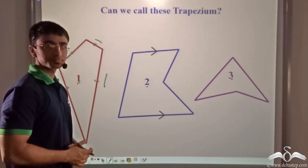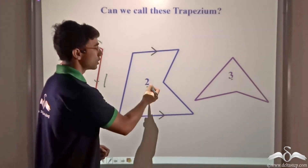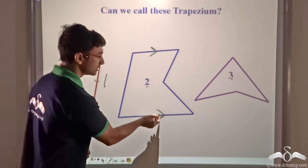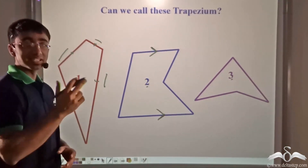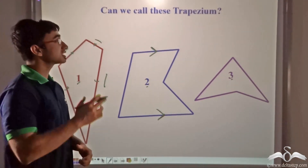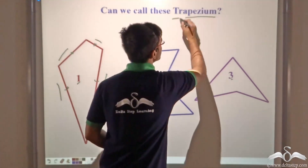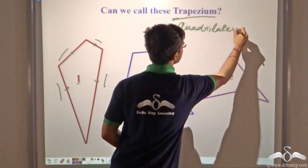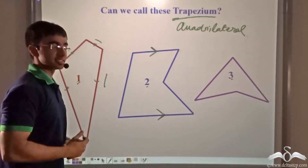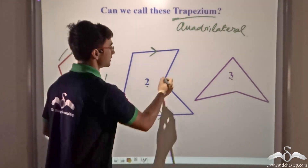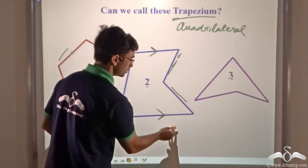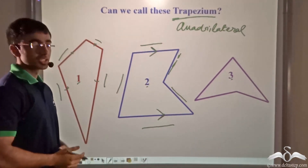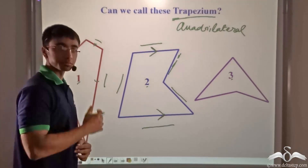Figure 2 has one pair of parallel sides, but it is still not a trapezium. A trapezium must first be a quadrilateral — a polygon with four sides. This figure has five sides, so it is not a trapezium.